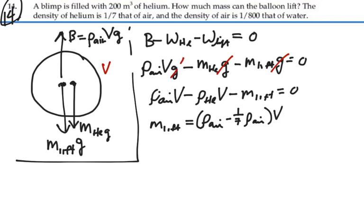So we'll have that this is equal to six-sevenths times the density of air which we're told is one-eight-hundredth that of water. So we'll have one-eight-hundredth of water which is a thousand kilograms per meter cubed times the volume, two hundred cubic meters. And that should give us the mass.